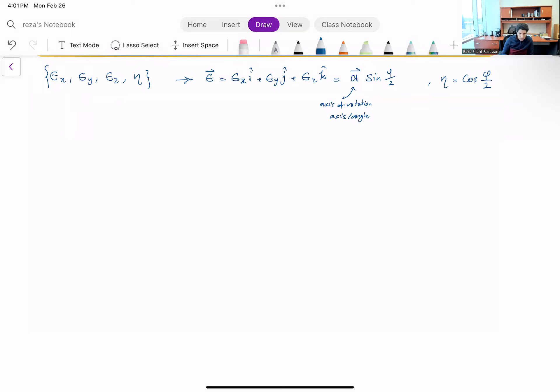So I want to find the rate of change of these parameters. Eta dot, let's start with that because it's a little easier. So eta dot, I'm just taking time derivative of this. And taking the derivative of that I have minus one half sine of phi over two times phi dot.